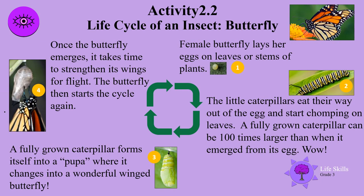The life cycle of an insect — a butterfly. Stage 1: the female butterfly lays her eggs on leaves or stems of plants. Stage 2: the little caterpillars eat their way out of the egg and start chomping on the leaves. A fully grown caterpillar can be 100 times larger than when it emerged from its eggs. Stage 3: a fully grown caterpillar forms itself into a pupa, where it changes into a wonderful winged butterfly.